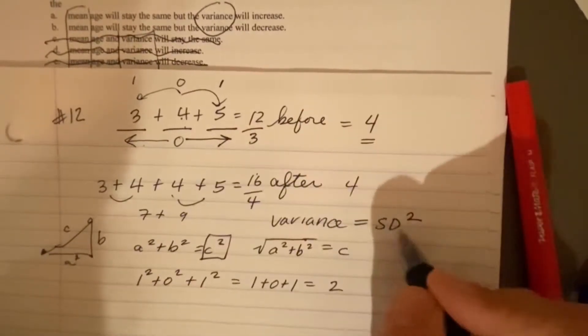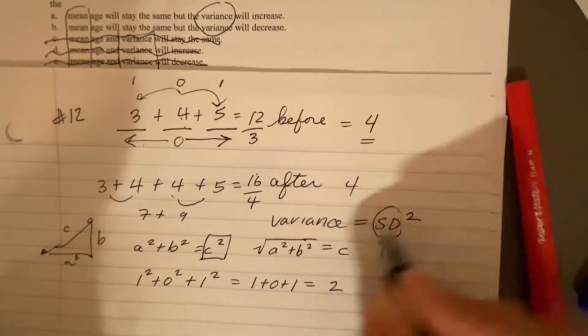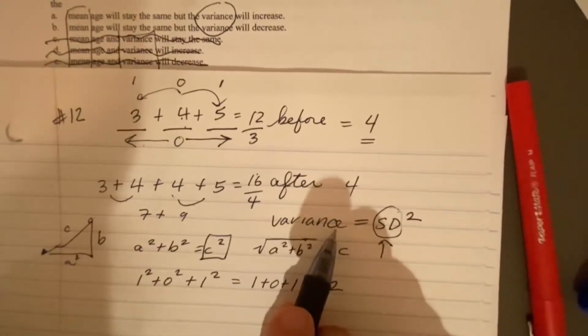So if the standard deviation gets bigger, then the variance is going to be bigger too.